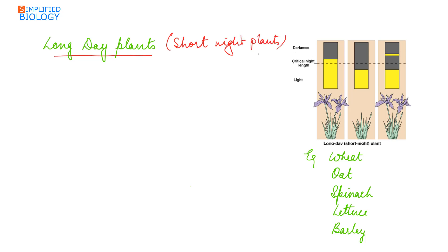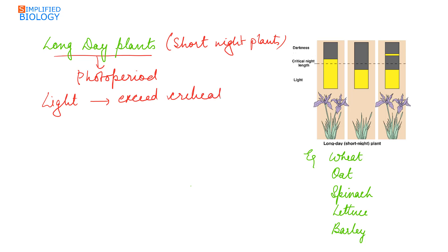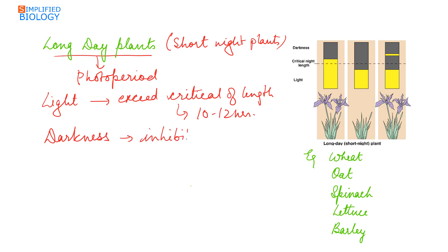In long day plants, the light period, also known as the photoperiod, is important for flowering. The light period should exceed the critical length of 10 to 12 hours for flowering to occur. Darkness has an inhibitory effect on flowering. Long day plants can be made to flower under short day conditions.